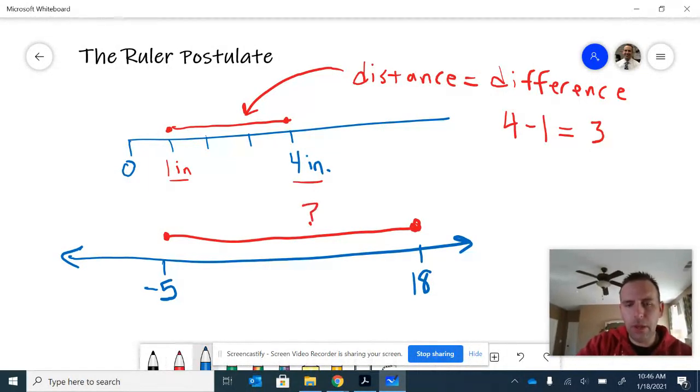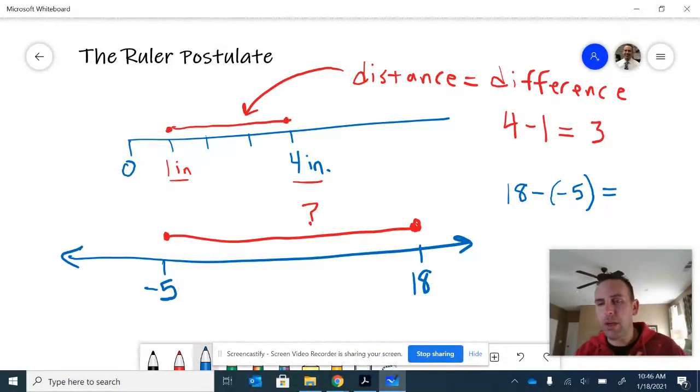Well, it can be found just by using the difference as well. If you take the larger number 18 and subtract the smaller number, subtract negative five, you will get, well, you can see that this expression 18 take away negative five, and many of you probably know this is equivalent to 18 plus five, giving you the total distance of 23.